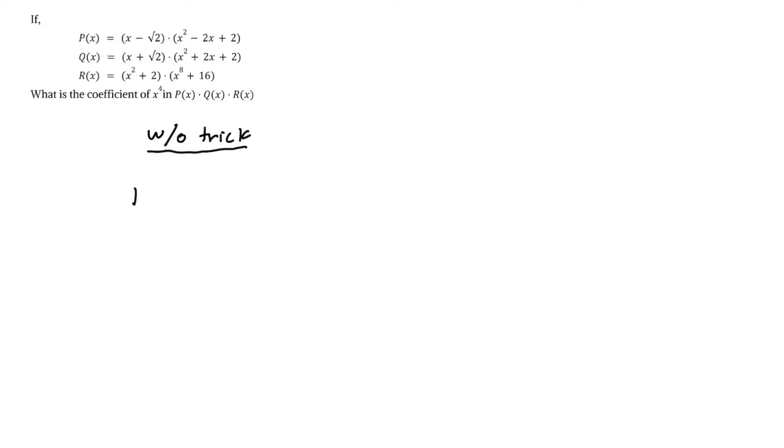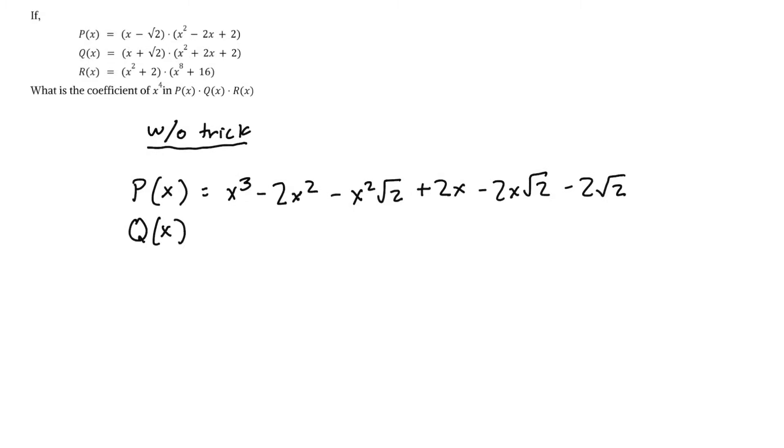We should get for P(x): x³ - 2x² - x²√2 + 2x - 2x√2 - 2√2. Q(x) should equal x³ + 2x² + x²√2 + 2x - 2x√2 - 2√2. And finally, R(x) should equal x¹⁰ + 2x⁸ + 16x² + 32.